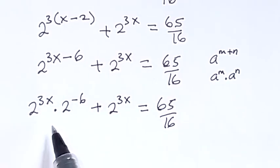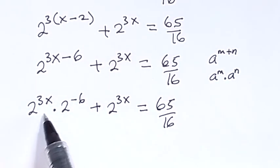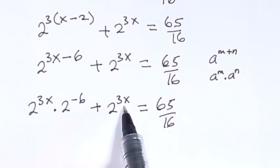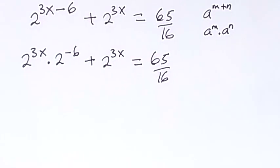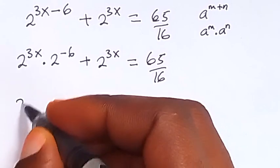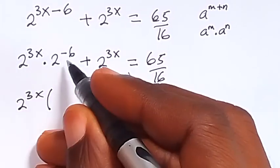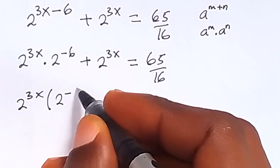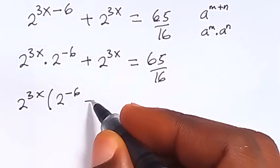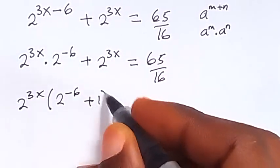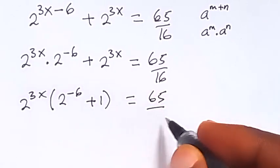From here, the next step is to factor out 2 raised to power 3x. So we have 2 raised to power 3x, multiplied by the bracket 2 raised to power minus 6 plus 1, which equals to 65 over 16.